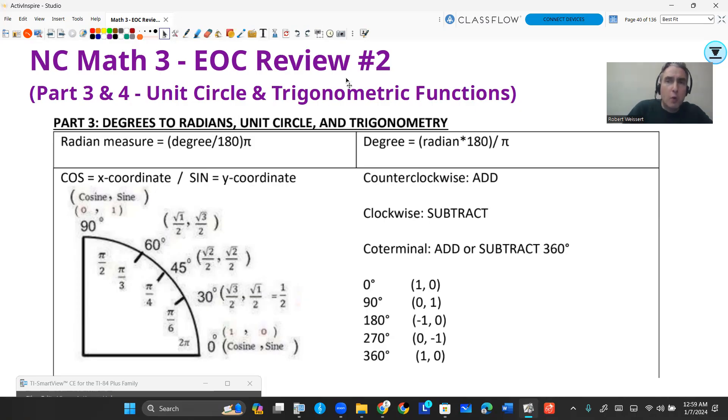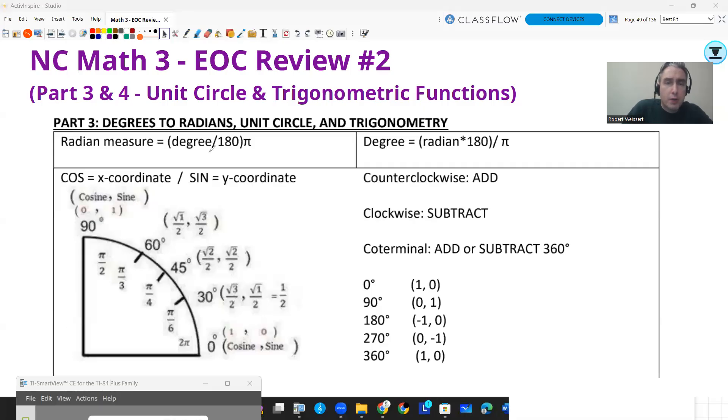So one thing I'm going to say real quick is if I'm converting from a degree to a radian or a radian to degree, I'm going to take my degree measure and multiply it by π over 180 to get a radian. And if I want to get a degree, I'm going to take my radian measure and multiply it by 180 over π to get a degree. So those will help us out.